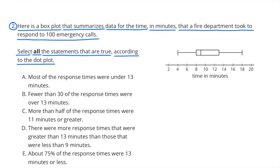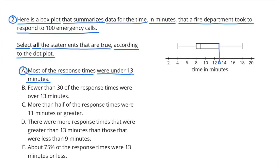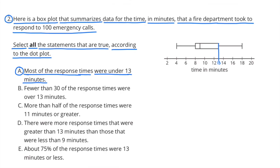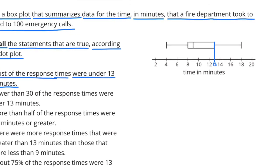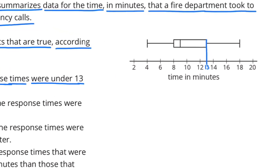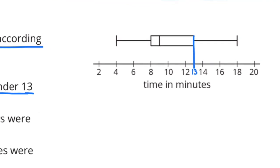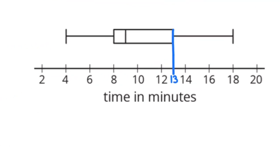Number 2. Here is a box plot that summarizes data for the time, in minutes, that a fire department took to respond to 100 emergency calls. Select all the statements that are true according to the box plot. Statement A is true, because most of the response times were under 13 minutes. In fact, three quarters, or 75% of the response times, were less than 13 minutes.